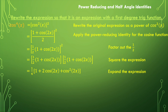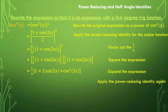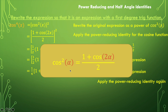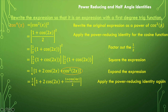We're well on our way, but remember our goal is a first-degree trig function. We've taken our fourth-degree down to second-degree, but we need first-degree. So we're going to apply the power-reducing identity again, just to the cosine squared of 2x term. In the formula, if the argument is 2x, then doubling it gives 4x. So we replace cosine squared of 2x with (1 plus cosine of 4x) over 2, making the argument 4x.